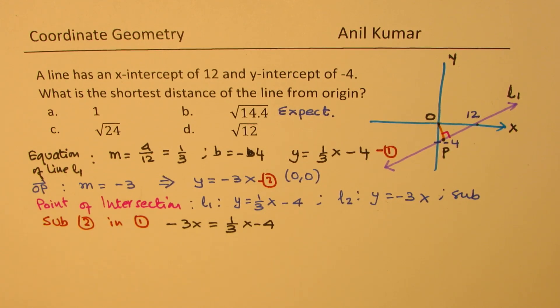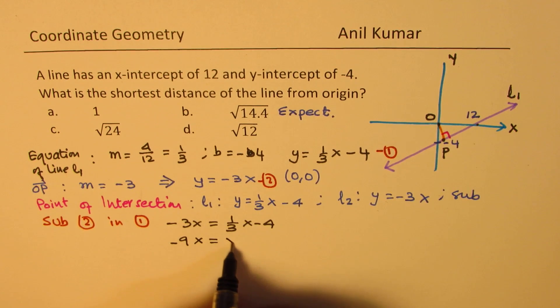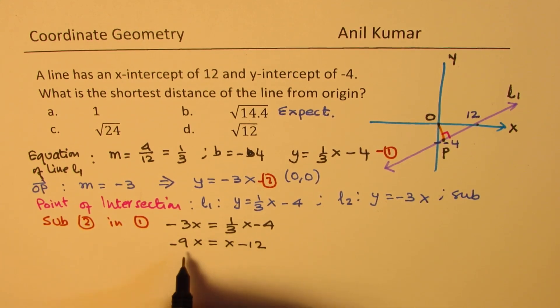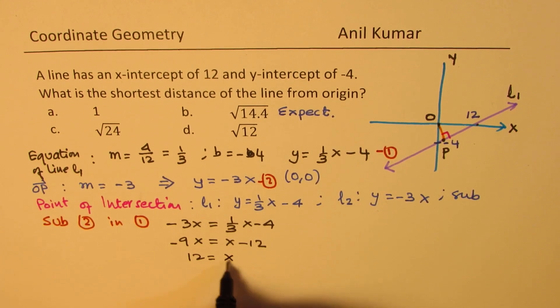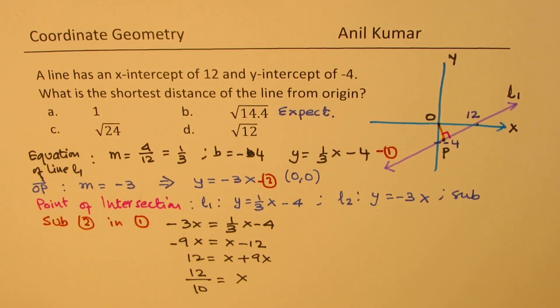So, you get minus 9X equals to X minus 12, bringing X to this side and 9X to the other side. We get 12 equals to X plus 9X. So, that gives you that 12 over 10 is equal to X. X plus 9X is 10.